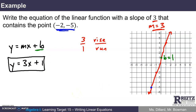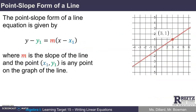That's a perfectly fine way to solve this problem, but it was really convenient that we had a graph already made. What we want to show you is another approach: the point-slope form of a line. The point-slope form is y minus y-sub-1 equals m times the quantity x minus x-sub-1. That 1 is a subscript, not an exponent. This equation works when m is the slope and the point (x-sub-1, y-sub-1) is any point on the graph of the line.